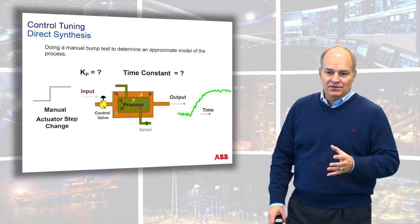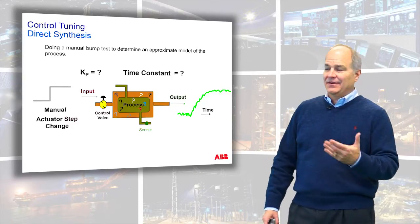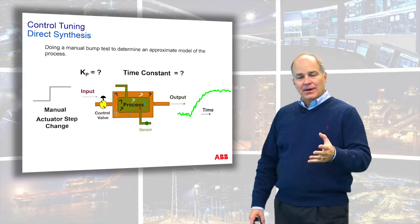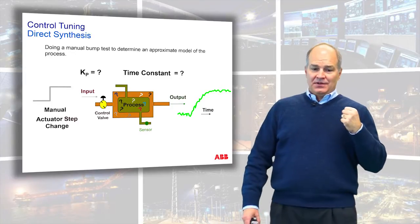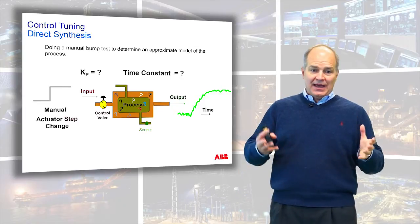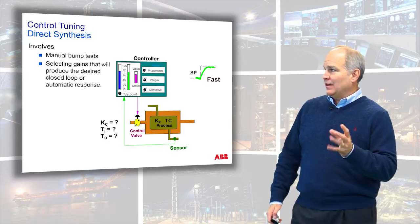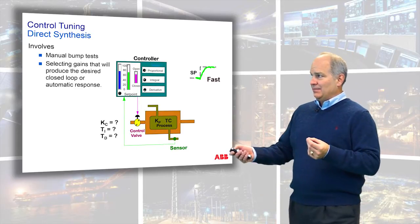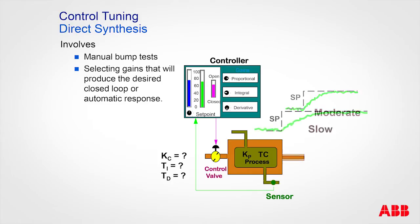Regardless of which method you use, you have to start with the process. You must look at the process and identify its dynamics — we spent a whole lesson on that. Whether you do a bump test, look at first principles, or do a visual inspection, you need an idea of the process dynamics. Once identified, you come up with tuning parameters to give you a fast, moderate, or slow response.